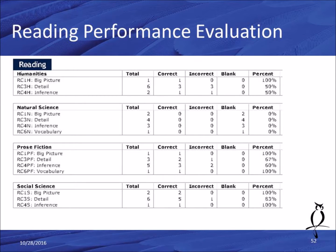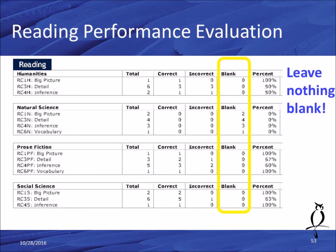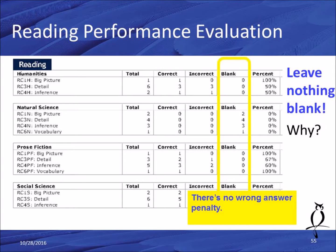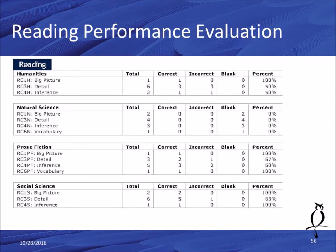The next section is the reading performance evaluation, set up exactly the same way. First thing to look at is the blank column — everything should be a zero. If it's not, then next time you take a practice or real exam, make sure you leave nothing blank. There's no wrong answer penalty, so put some answer for every question. The other columns tell you total in each question category, how many you got right, how many wrong, and percent correct.